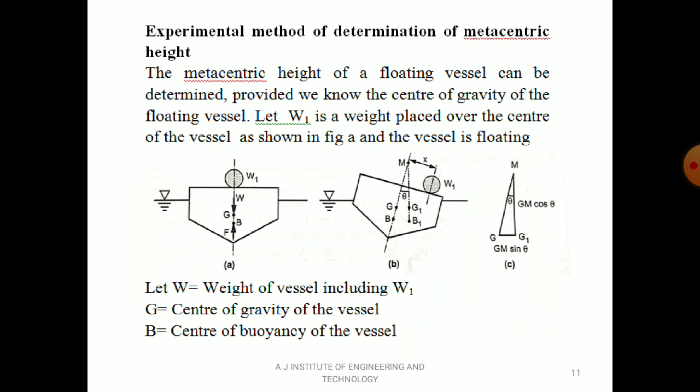Now the experimental method for determination of metacentric height. We need to find GM using experimentation; there is also an analytical method. The metacentric height of a floating vessel can be determined provided we know the center of gravity G of the floating vessel. Let W1 be the weight placed over the center of the vessel. Let W equal the total weight of the vessel including W1, G equal the center of gravity, and B equal the center of buoyancy.